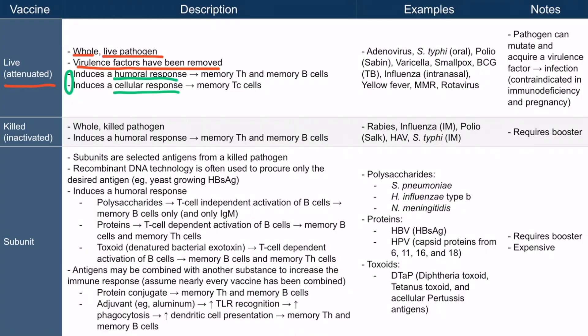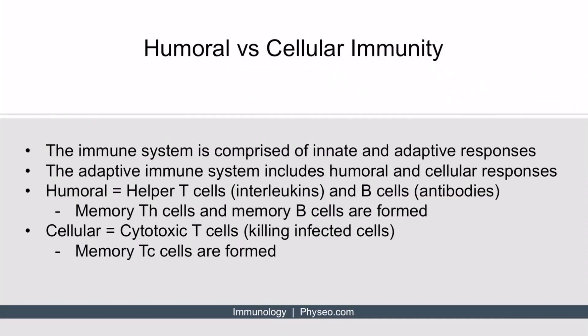Let's clarify humoral versus cellular immunity. The immune system is comprised of innate and adaptive responses. As you may recall from section two, acute inflammation is mediated by the innate arm of the immune system, including things like neutrophils, complement, and mast cells.